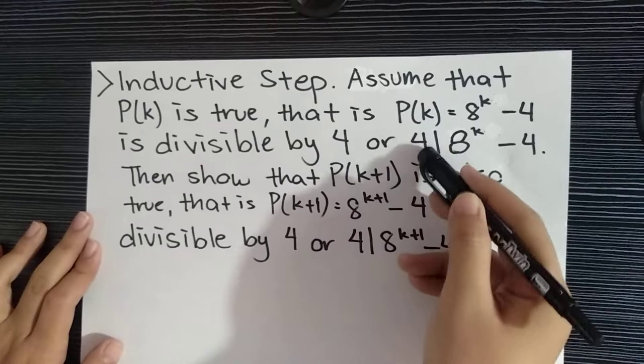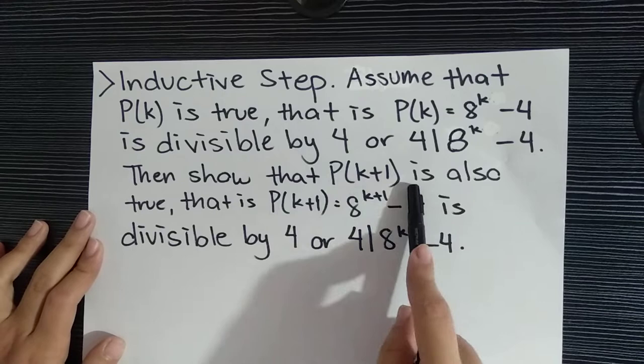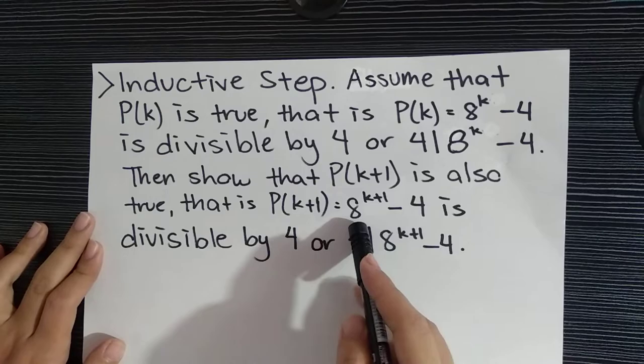Then show that P(k+1) is also true. That is, P(k+1) equals 8^(k+1) - 4 is divisible by 4, or 4 | 8^(k+1) - 4.